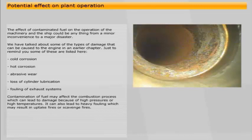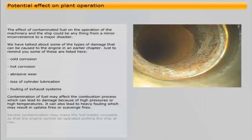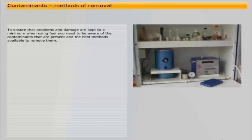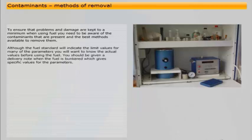Contamination of fuel may affect the combustion process, which can lead to damage because of high pressures or high temperatures. It can also lead to heavy fouling, which may result in uptake fires or scavenge fires. Severe contamination may make the fuel totally unusable, so that the engine cannot be operated, putting the ship at risk. To ensure that problems and damage are kept to a minimum when using fuel, you need to be aware of the contaminants that are present and the best methods available to remove them. Although the fuel standard will indicate the limit values for many of the parameters, you will want to know the actual values before using the fuel.